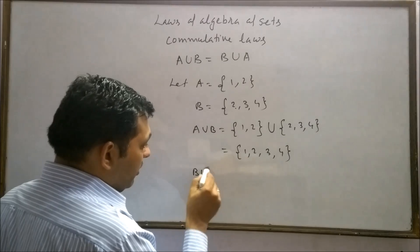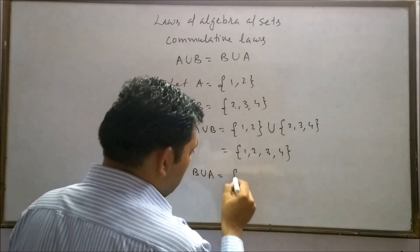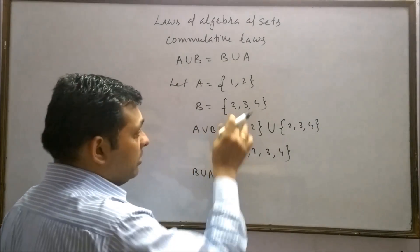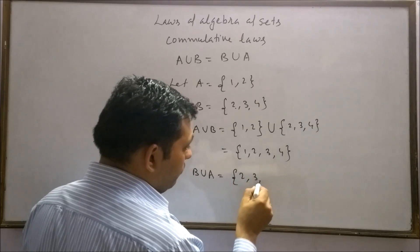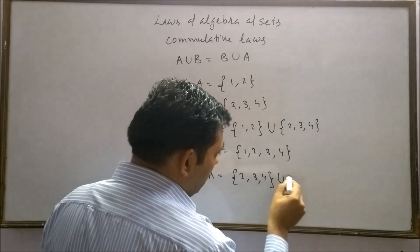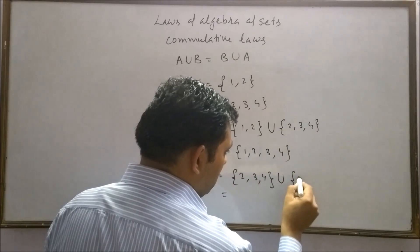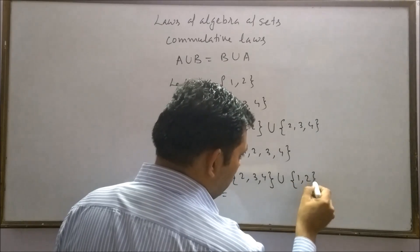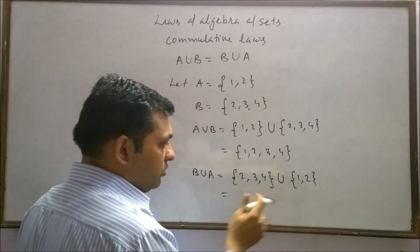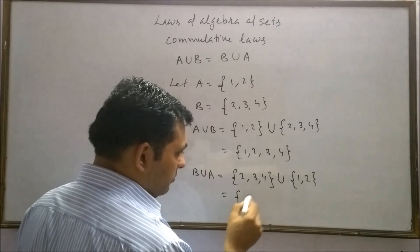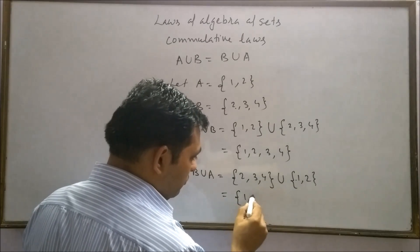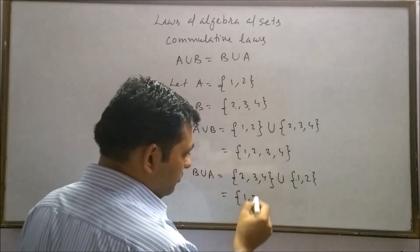Similarly, B union A. B is here {2, 3, 4} union set A containing 2 elements {1, 2}. By combining these two sets, we get {1, 2} - 2 is also here - {3, 4}.